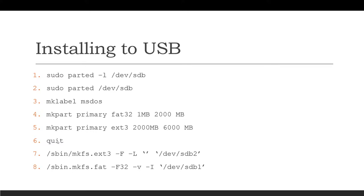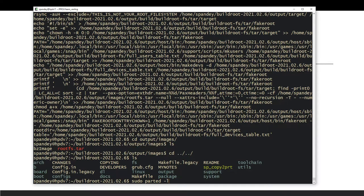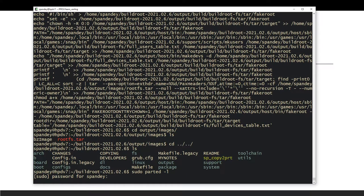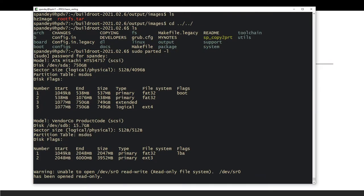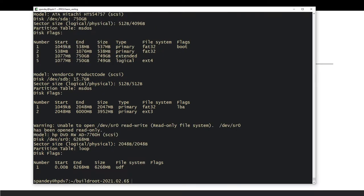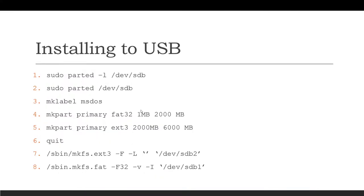These are parted commands — lines three through six are run inside parted. Once done, you have your partition table: the first partition is FAT32 and the second is ext3. I'm not going to run these commands but I'll show you the partitions already exist. Run 'sudo parted -l' and you can see the first partition is FAT32 and the second is ext3 — both set correctly on the USB disk.